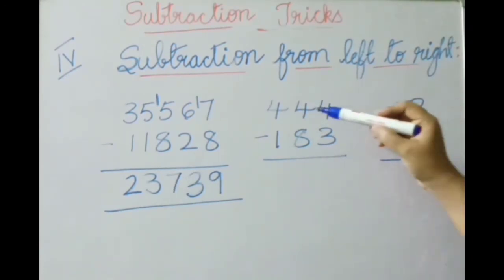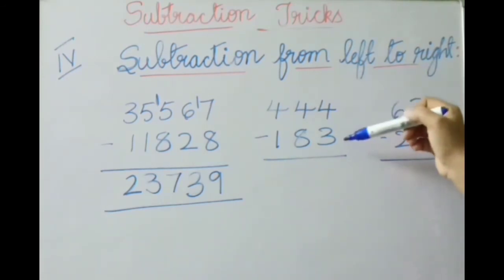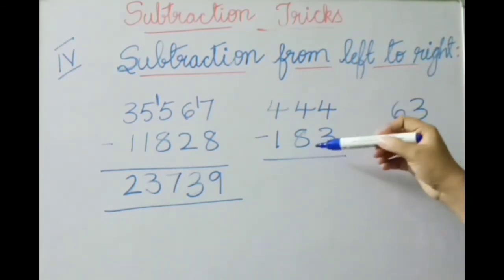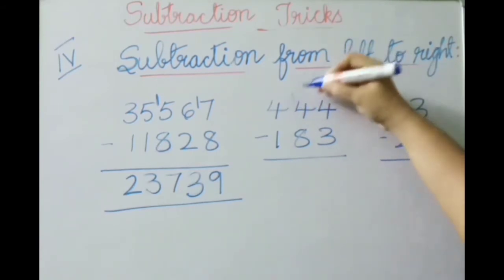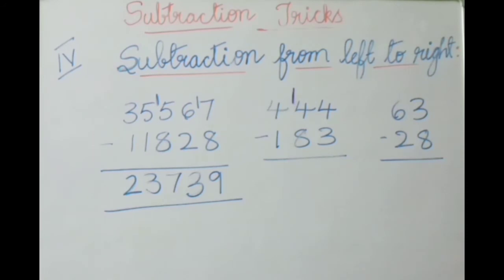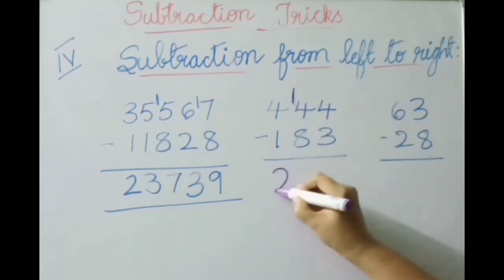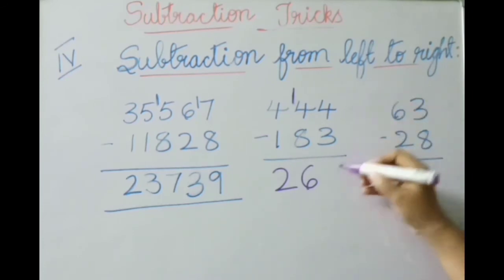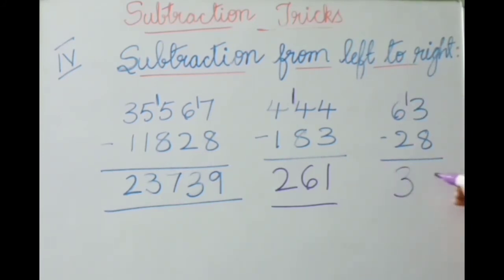See the next example: four hundred forty-four minus one hundred eighty-three. Here one can be subtracted from four easily, and three also can be subtracted from four easily, but eight cannot be subtracted from four. So we take a borrow from the previous four, making it fourteen. We gave a borrow, so three remains. Three minus one is two, fourteen minus eight is six, four minus three is one. The answer is 261. Next: eight cannot be subtracted from three, so take a borrow — it becomes thirteen; five is left over. Five minus two is three, thirteen minus eight is five. The answer is 35.